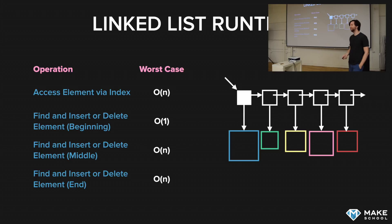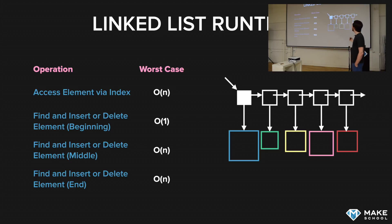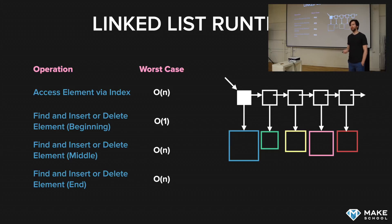Why not just create a tail pointer? That's a great question — and usually you do create a tail pointer, so you can access the last element directly and get constant time access. In this case there's no tail pointer, but there's no reason you couldn't add one to a singly linked list, and most implementations will have them.